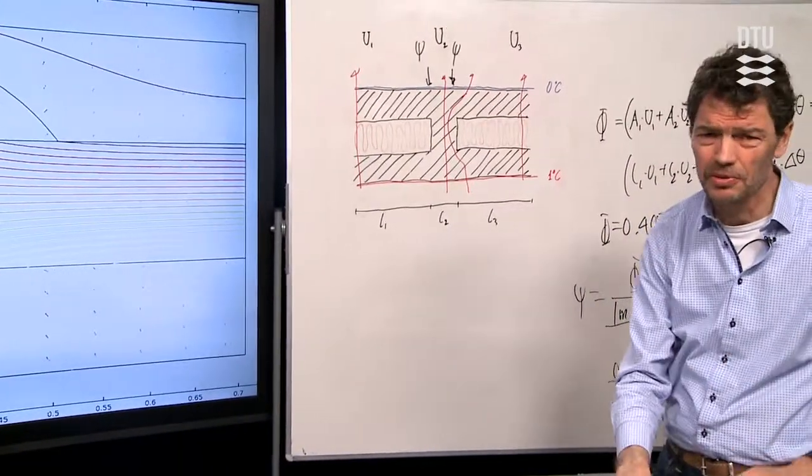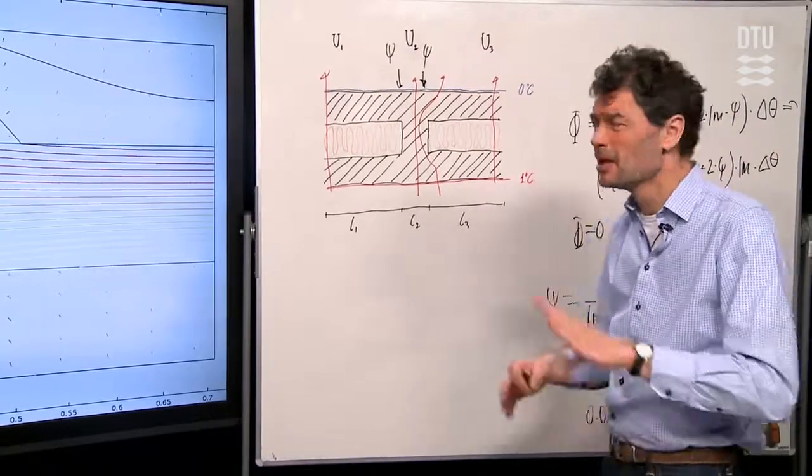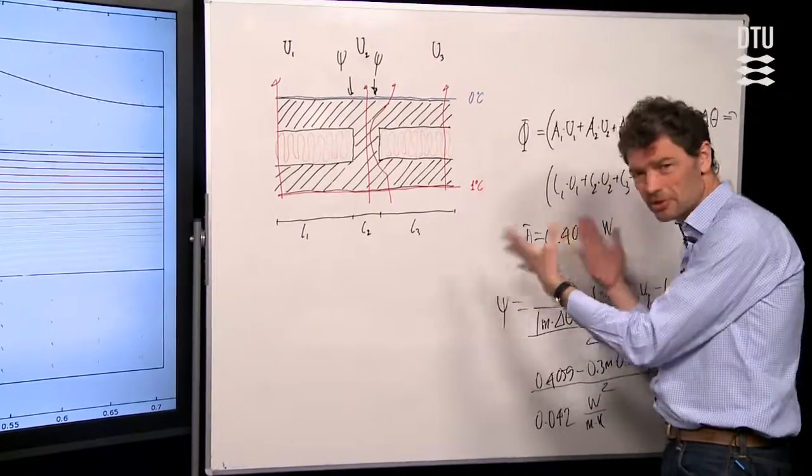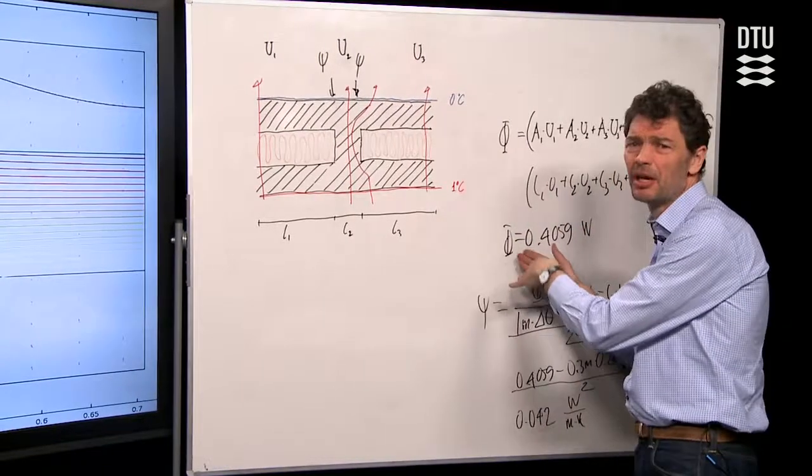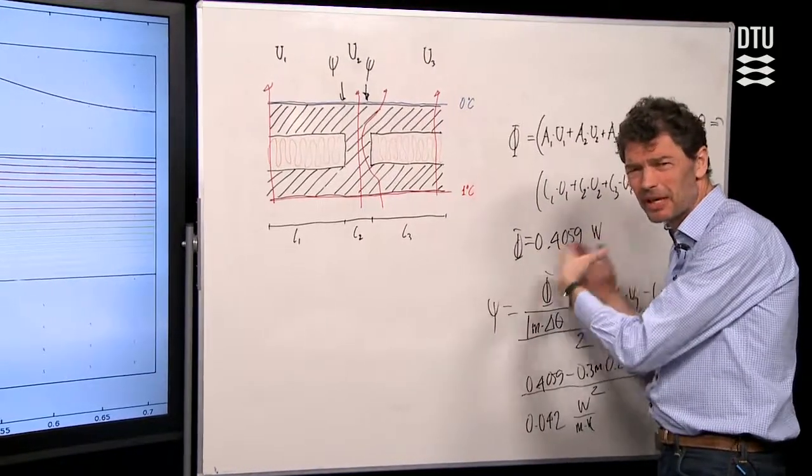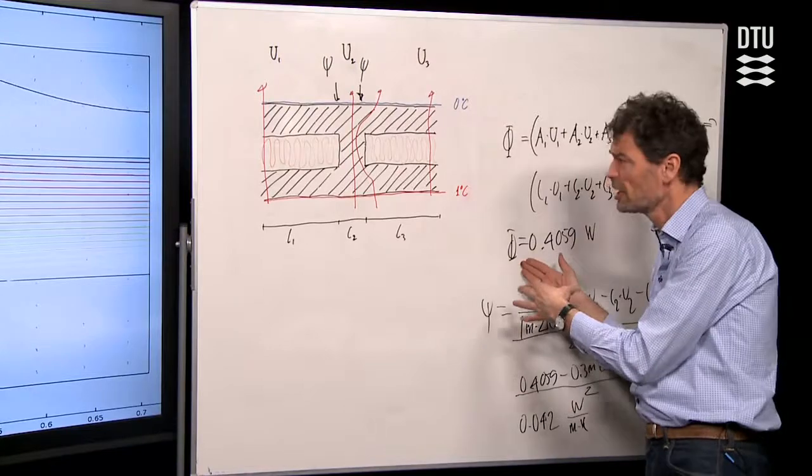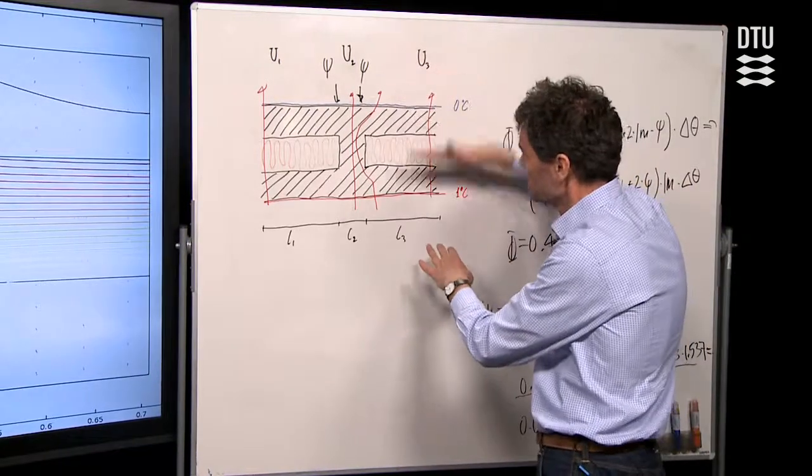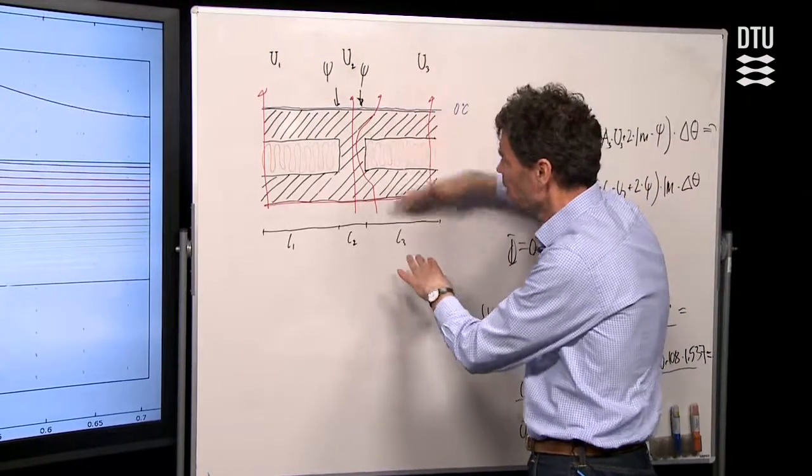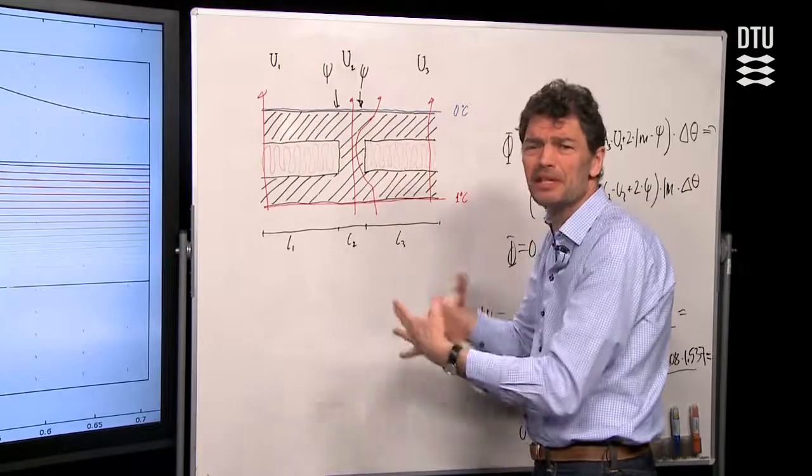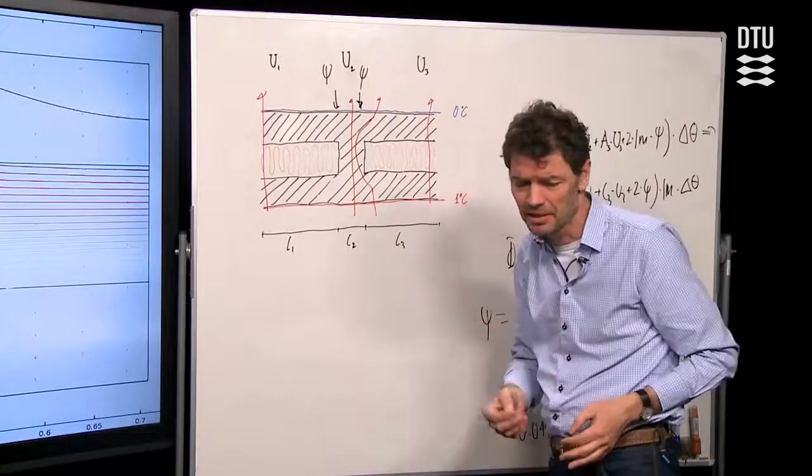So that was how to calculate a Psi value for this special geometry in this case. And how you will always need to calculate Psi values. The notion is to calculate what is a real multidimensional calculated heat loss. Subtract from that those elements that would normally be seen for one-dimensional flow. And then Psi expresses kind of the extra that you will get.